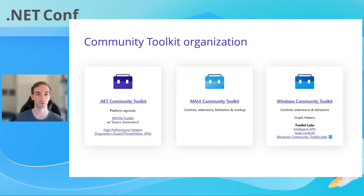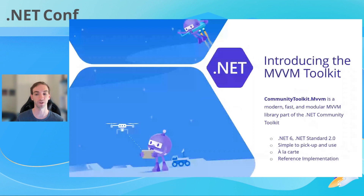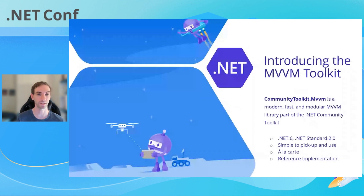Then lastly, there's the MVVM Toolkit, which is a new modular, fast, and modern MVVM library which is part of the .NET Community Toolkit. This is meant to be an official successor to MvvmLight. In fact, we've collaborated with Laurent Bugnion, who is the original author of MvvmLight, to ensure that existing MvvmLight users have a nice migration path to the MVVM Toolkit. We're also using this in several inbox applications such as the Microsoft Store and the Photos app.